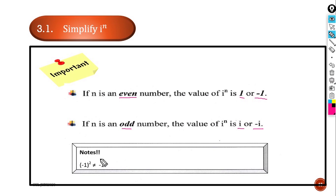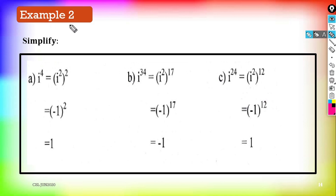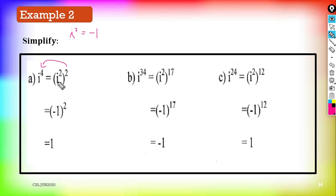Note: (−1)² is not equal to −1². Example 2: simplify (a) i^4. We put i² into a bracket because i² = −1. So i^4 = (i²)², and 2 × 2 = 4. Replace i² with −1: we get (−1)², which equals positive 1.